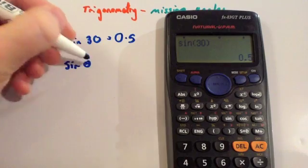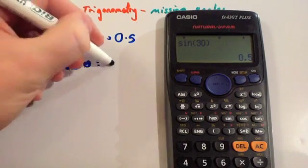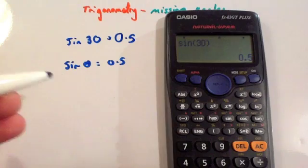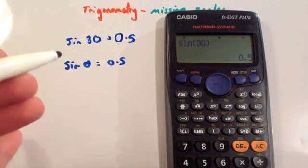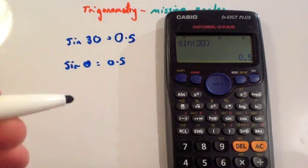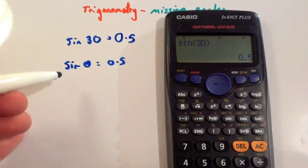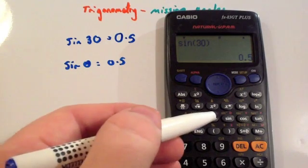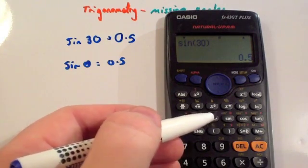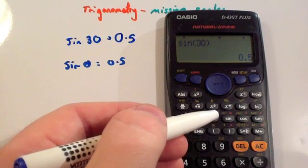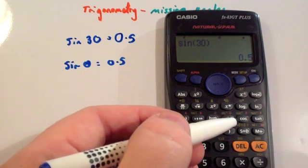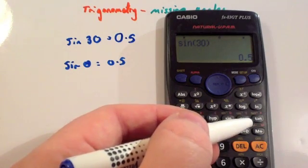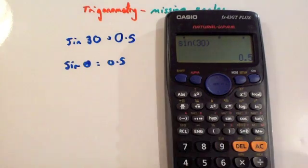Sometimes you might have something like this: the sine of a certain angle is 0.5, and you've got to work out what the angle would be. Luckily, you don't need to do it using trial and improvement — you can just do the inverse operation. The inverse operation of sine is sine to the minus 1, the inverse sine, which you'll see above the sine button on the calculator. The inverse of cos is cos to the minus 1, and the inverse of tan is the inverse tan.